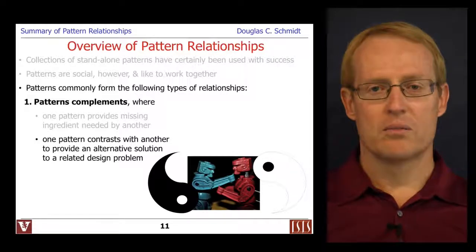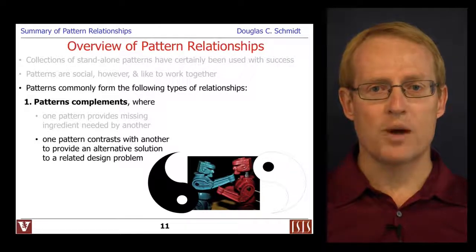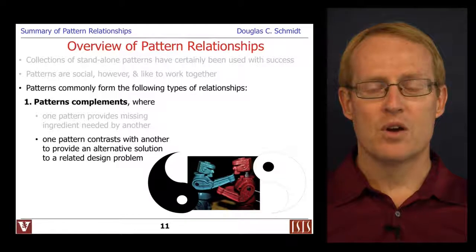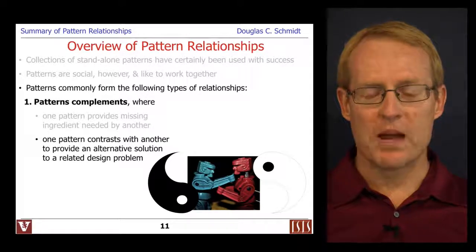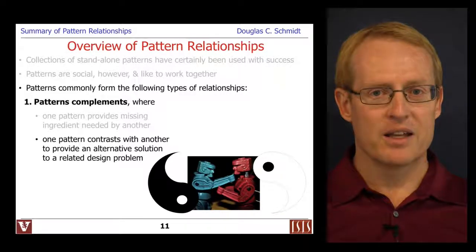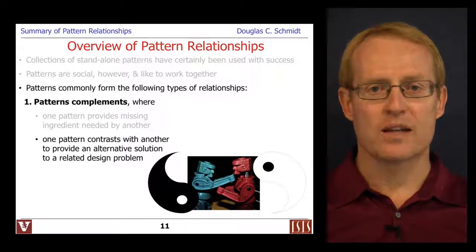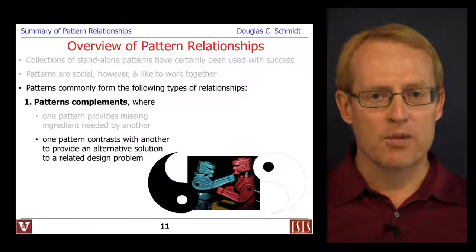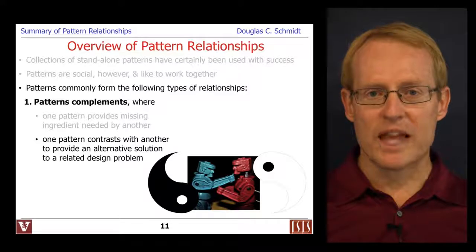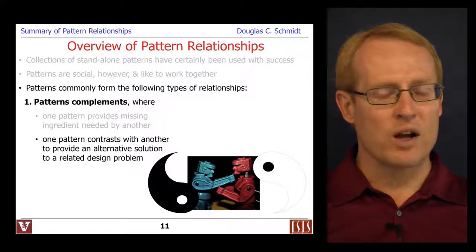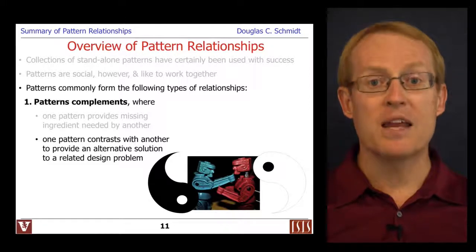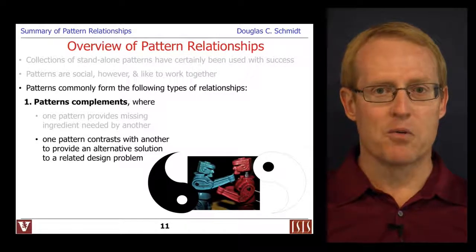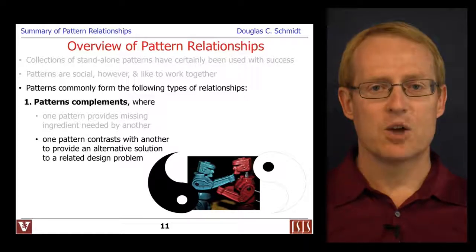Pattern complements also provide a way to contrast one pattern with another, offering an alternative solution to a related design problem. For example, you may be familiar with the iterator pattern, which makes it possible to access each element in a container one at a time. This works fine in a single-threaded environment, but in a multi-threaded or distributed environment where latency is an issue, we may want to use a complementary pattern called batch method, where we group a sequence of operations to avoid round-trip latency across expensive domain crossings.